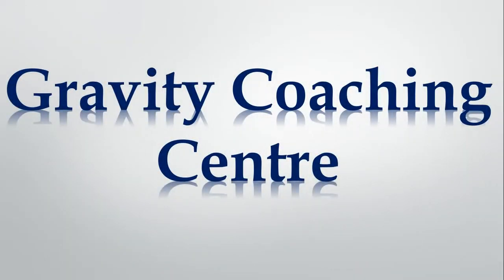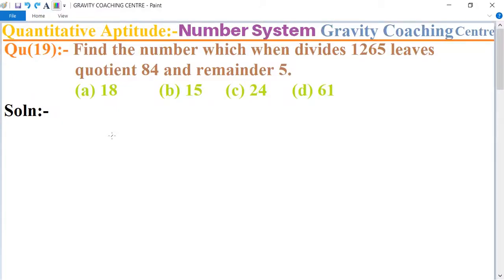Welcome to our channel, Gravity Coaching Centre. Quantitative Aptitude, chapter Number System, question number 19: Find the number which when divides 1265 leaves quotient 84 and remainder 5. So in this question, 1265 is divided by a number and gives quotient 84 and remainder 5. What is the number?